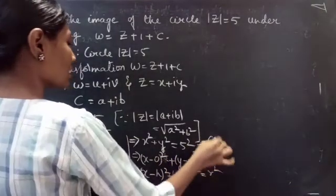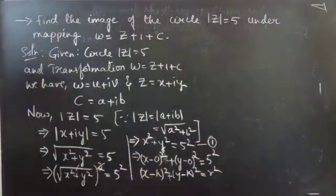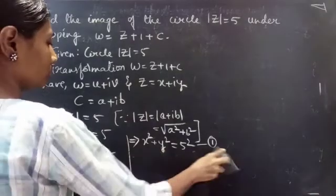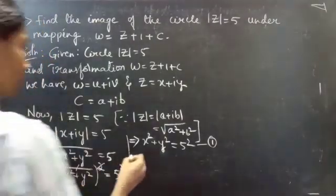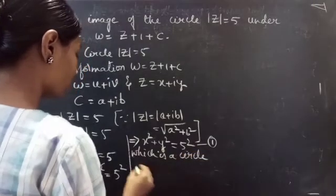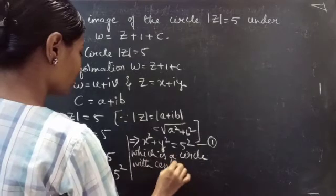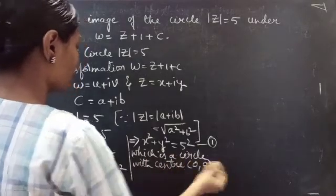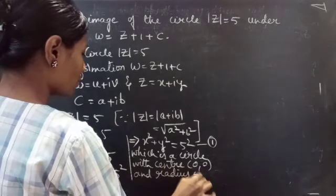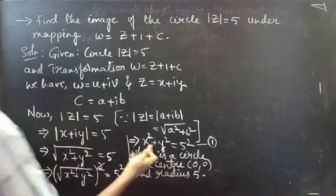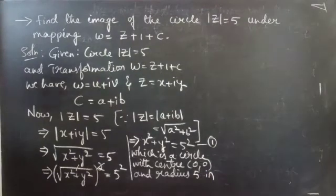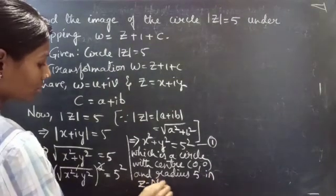This is of the form (x minus 0)² plus (y minus 0)² equals 5², which is the standard equation of a circle (x minus h)² plus (y minus k)² equals r². So this is a circle with center (0, 0), that is the origin, and radius 5, in the z-plane.